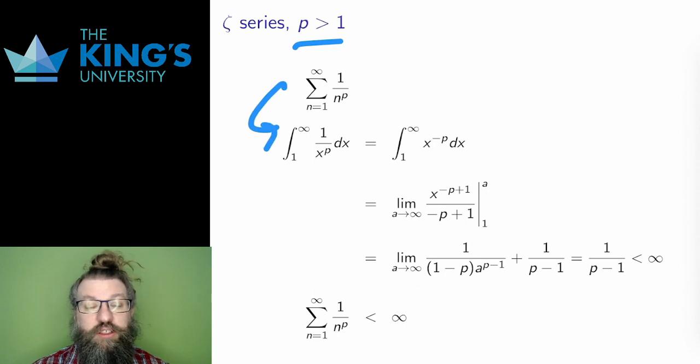The equivalent integral function is 1 over x to the p. I can write that as x to the negative p. And then if I integrate, I use the power rule. The new exponent is 1 more, negative p plus 1. And then I divide by that new exponent.